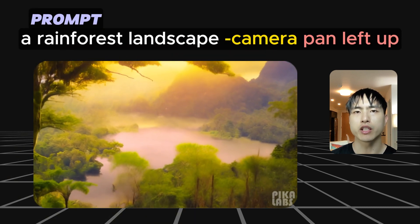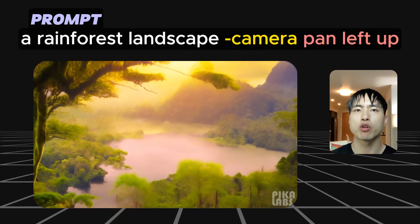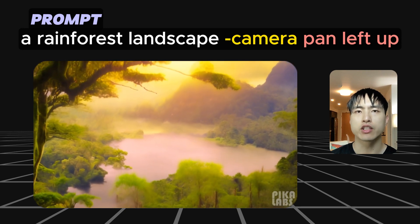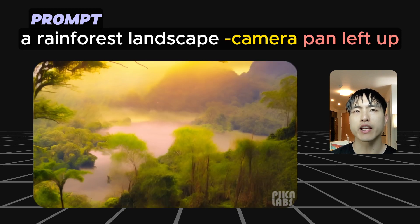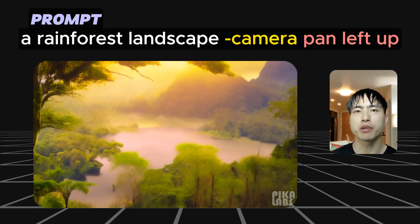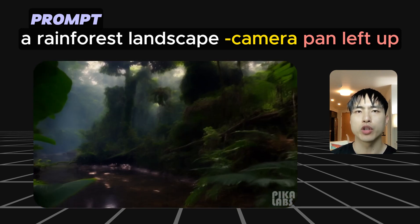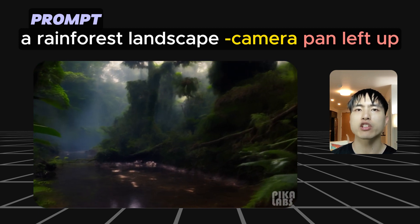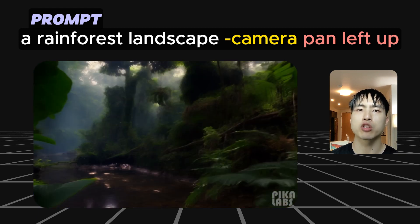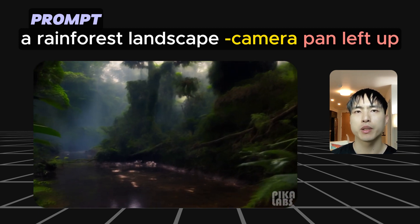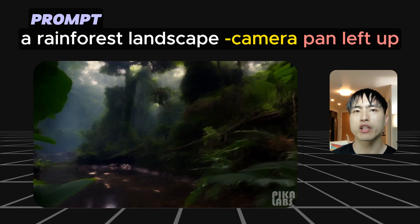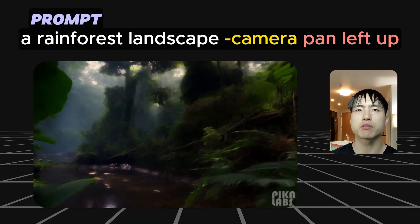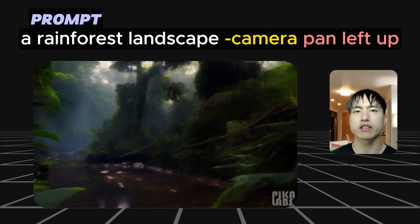Here's a video generated with a camera motion panning left and up. If you look closely, it's not obvious that the camera is moving up and left. In my experiments, when using the pan camera motion — especially when combining multiple directions like up and left — Pika tends to be more consistent when generating video of a person or an animal compared to landscapes.